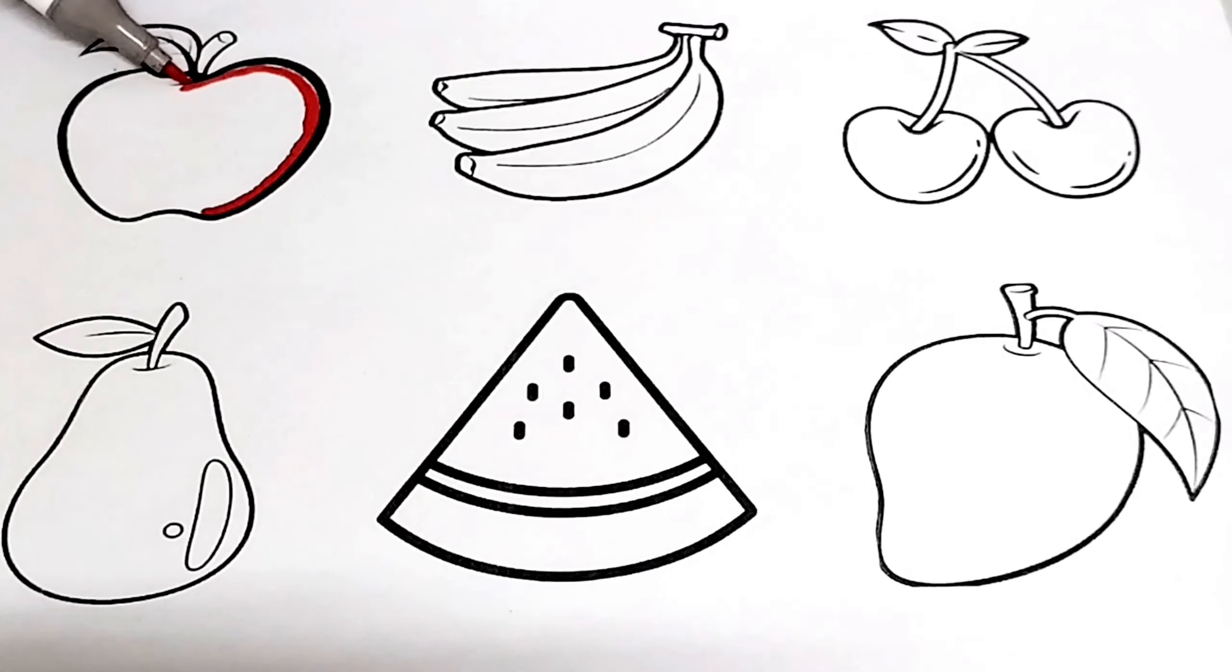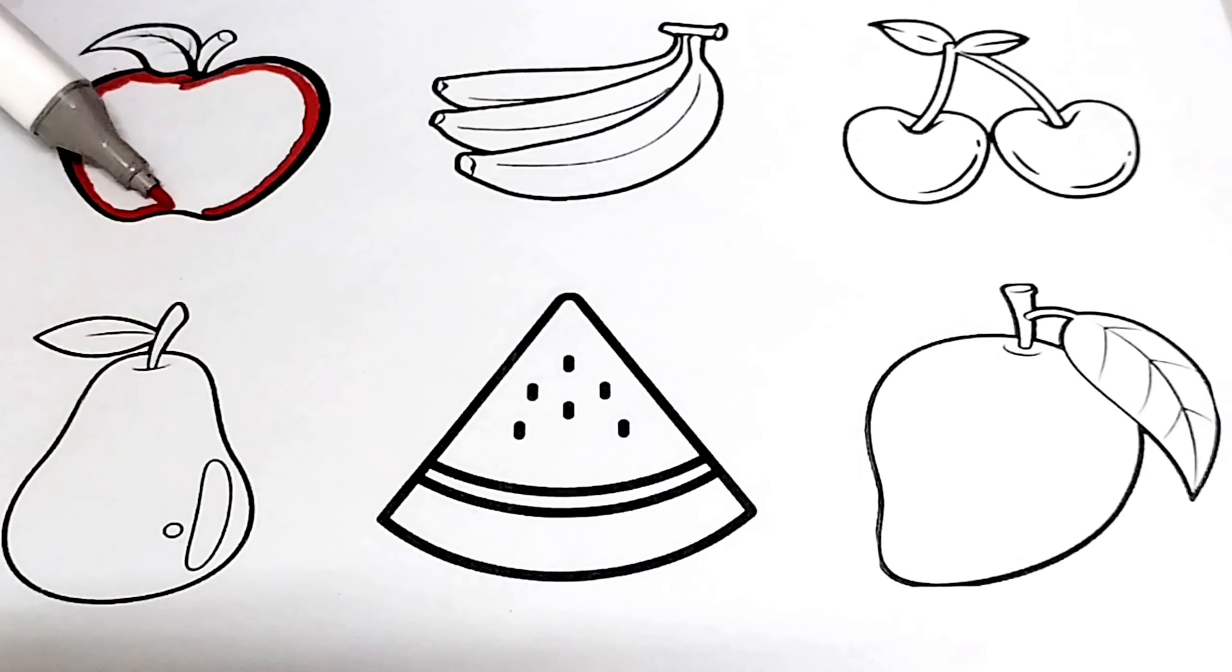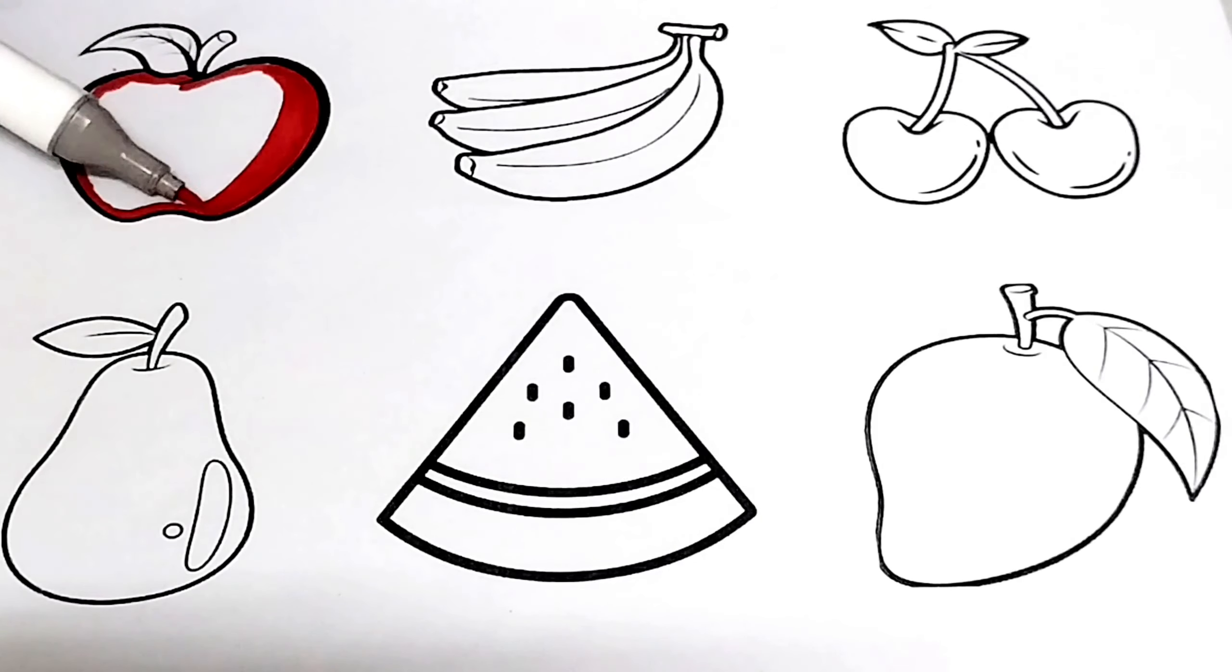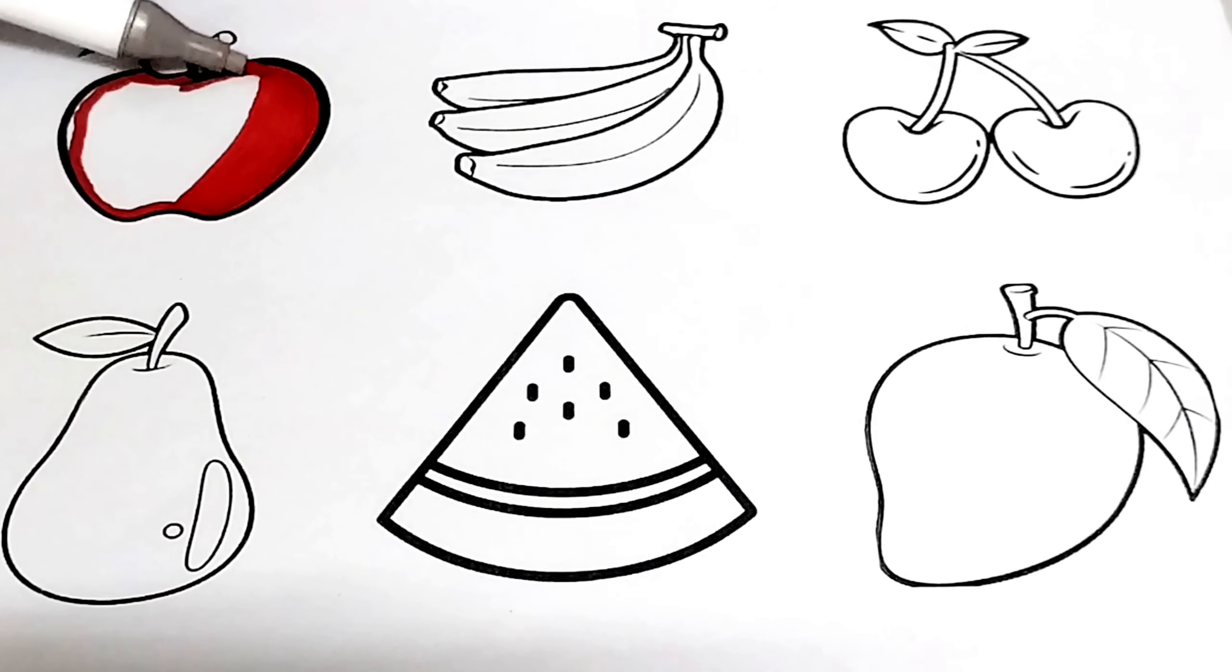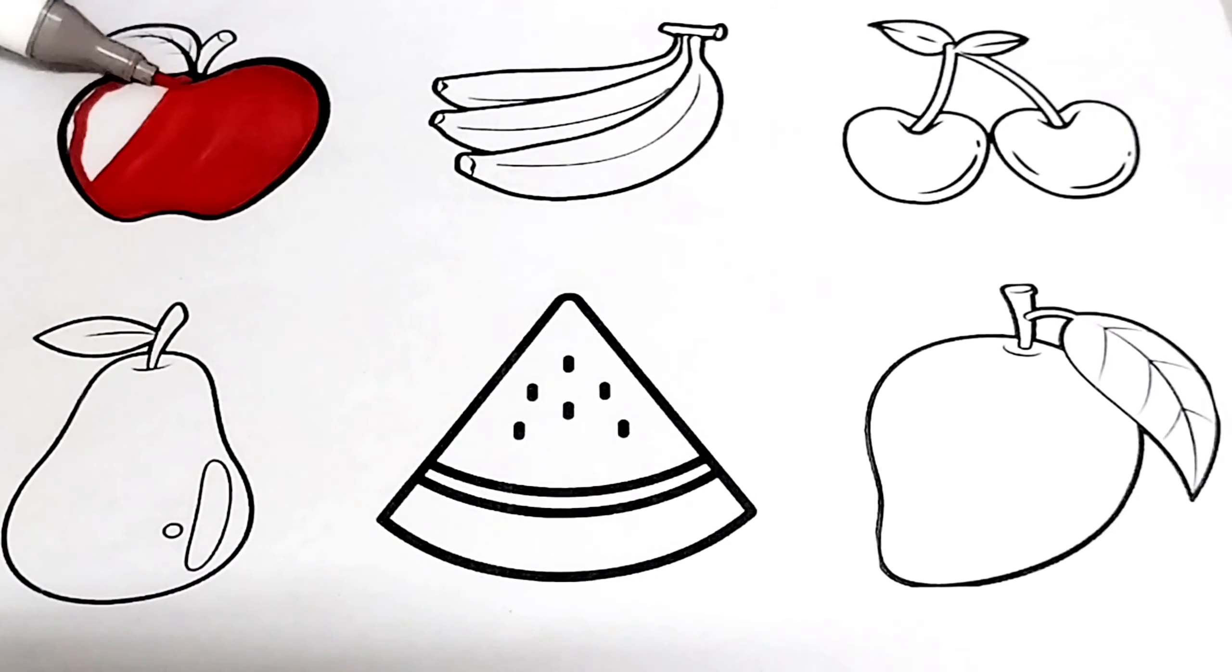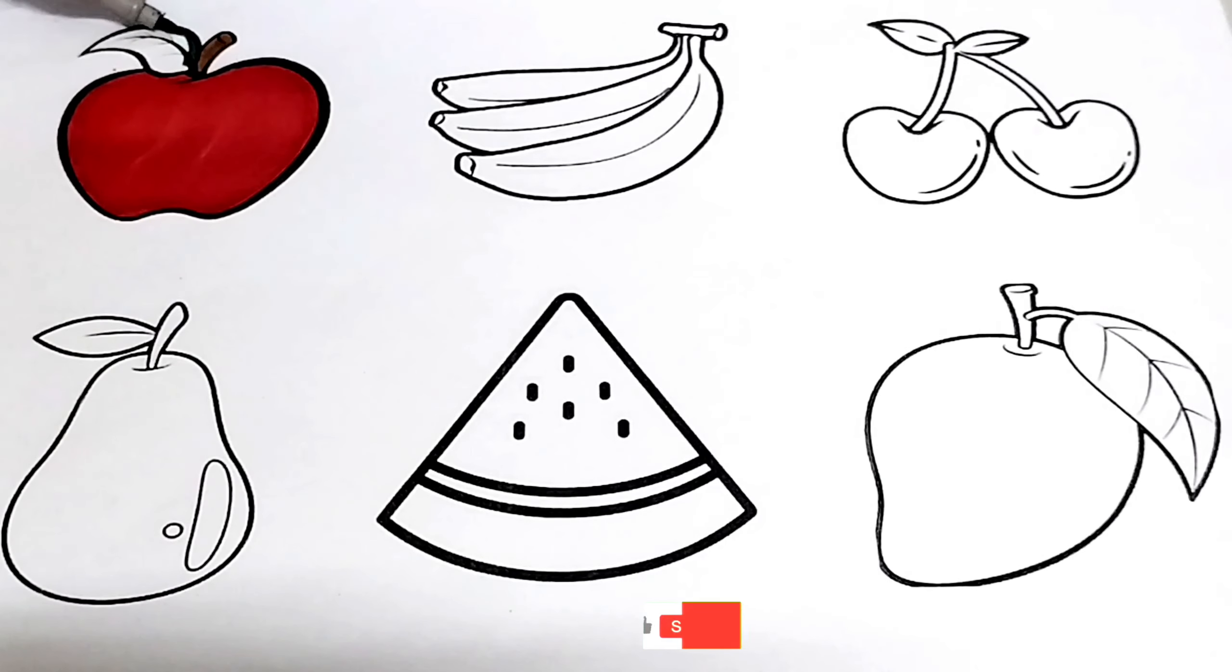First I am coloring in apple. I am coloring red color in apple. Healthy fruits, healthy life. An apple a day keeps doctors away. I am coloring brown color, now I am coloring green color.